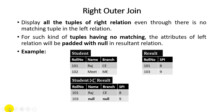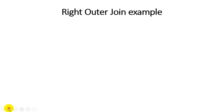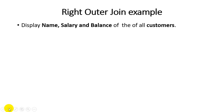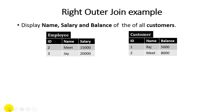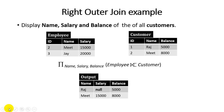Right outer join example: display name, salary, and balance of all customers. Using the same employee and customer tables, in right outer join all tuples from the right table (customer) must appear. 'Raj' and 'Meet' belong to the customer table; but 'Raj' is not available in the employee table, so salary is padded with null by default.